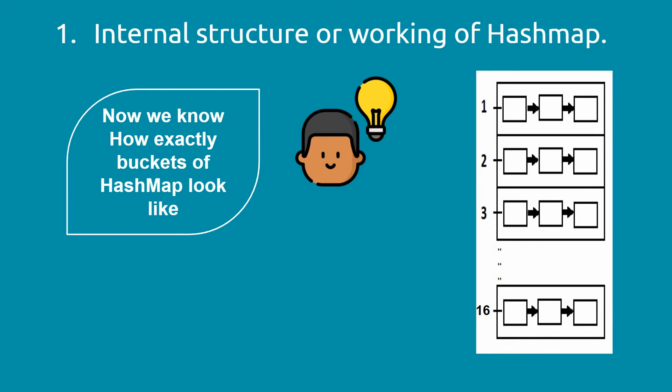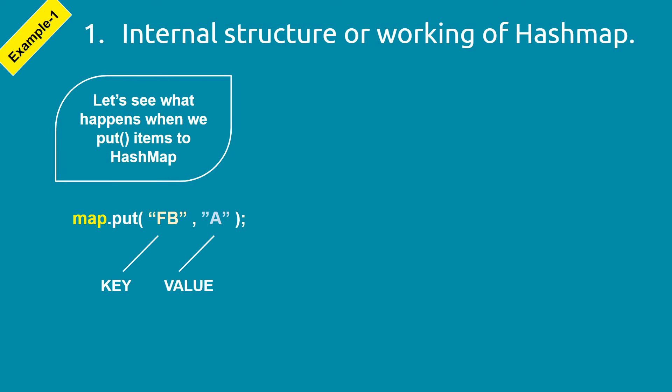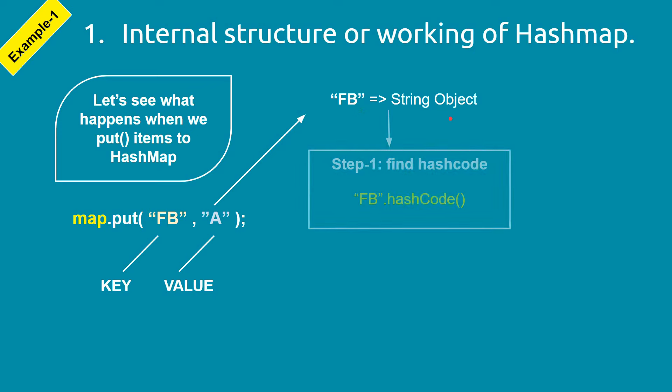Now we know how the buckets of a HashMap look — buckets are linked lists, each possibly having zero, one, or more nodes. Since HashMap stores key-value pairs, let's try putting one in. For example, key 'AB' with value 'A'. When we put a key-value pair, JVM gets the key from the pair. The key must be an object, not a primitive type — here it's a String object.